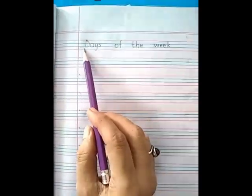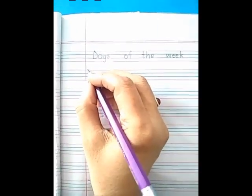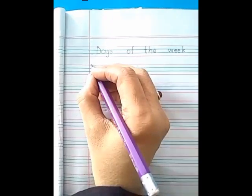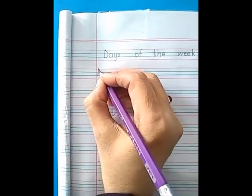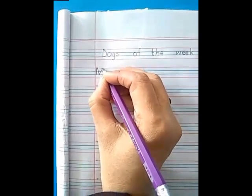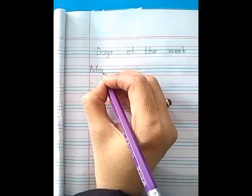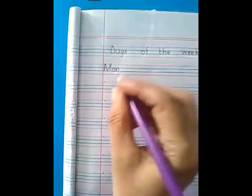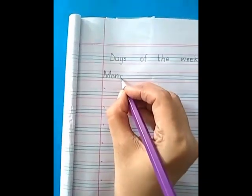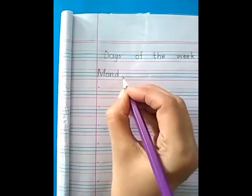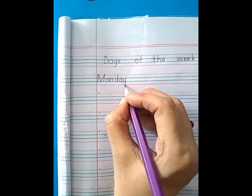Now do you know which day you have to write first? Monday. Just hold your pencil on this dot. Write M and read also what you are writing. M-O-N, then D-A-Y, day. Monday.